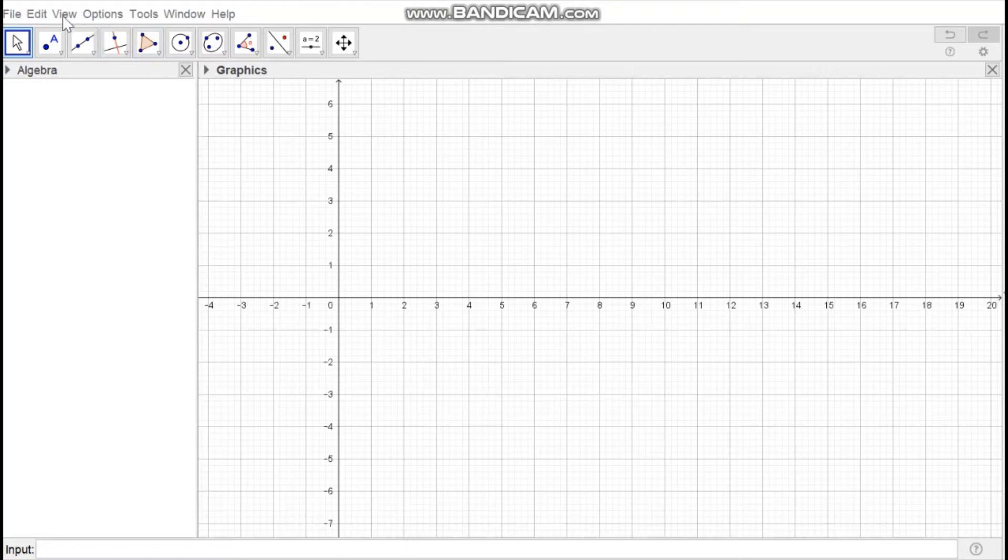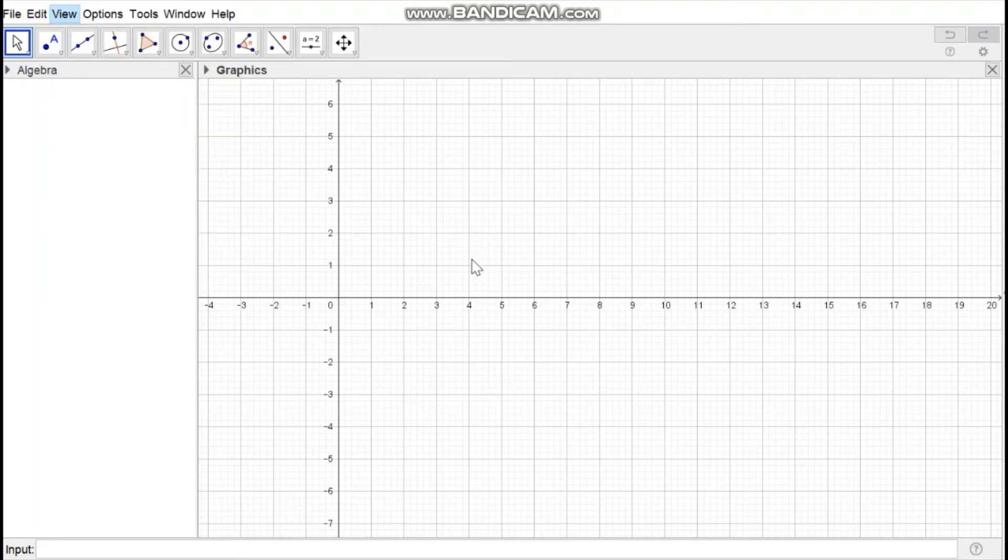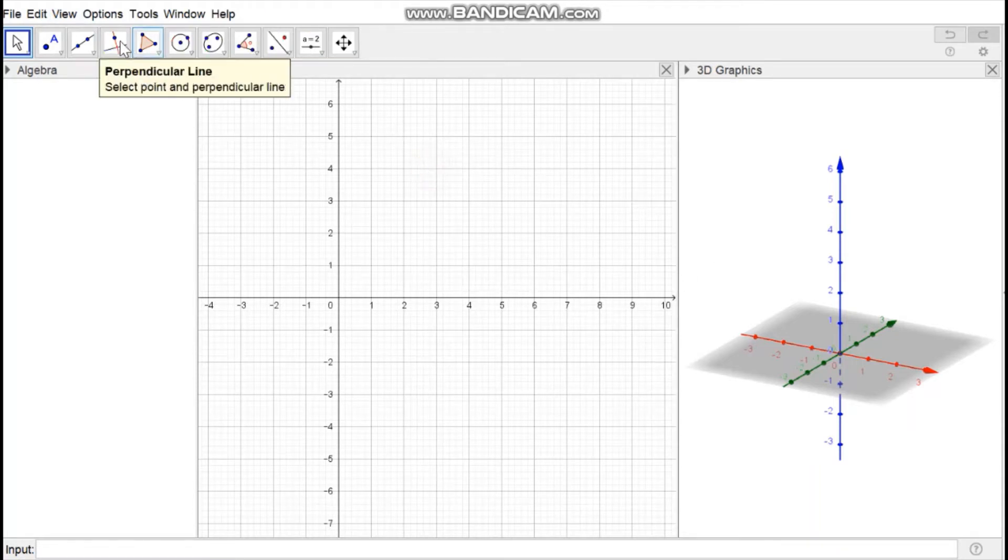Go to View and select 3D Graphics so that we can view both 2D and 3D views simultaneously. Then in 2D view, select the Polygon option and create a polygon of four sides.